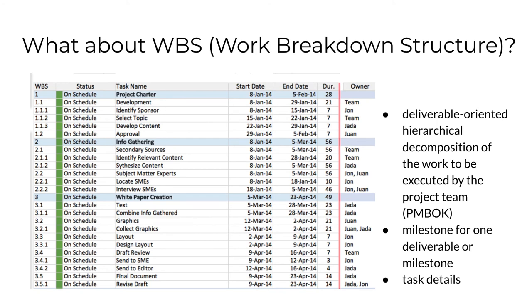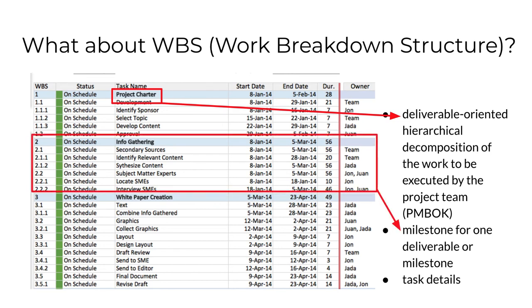It's also important to know what a WBS — Work Breakdown Structure — is all about. It's a common project management technique used primarily within a waterfall method, where every deliverable is known at the beginning of a project. A spreadsheet lists project deliverables such as a project charter, info gathering, and white paper creation. The deliverable 'info gathering' is decomposed into a hierarchy of tasks making up one work package or milestone. Each individual task includes start and end dates, expected duration, and the individual who owns that task. For large, complex projects with many team members, a WBS can be incredibly valuable, though it requires a lot of upfront planning.